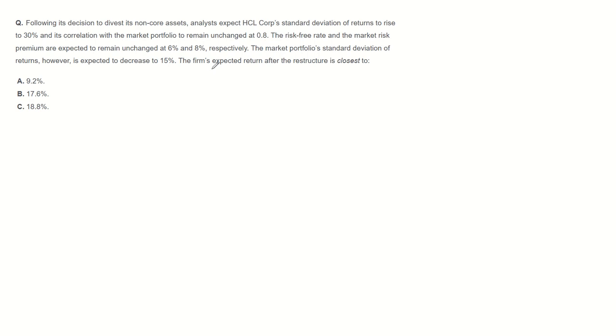We can calculate expected return of the company by using CAPM as risk-free rate plus systematic risk of the company, beta, multiplied by market risk premium, expected return of market minus risk-free rate. The question states the risk-free rate is 6%, 0.06, and we need to calculate beta. The market risk premium is 8%, 0.08.